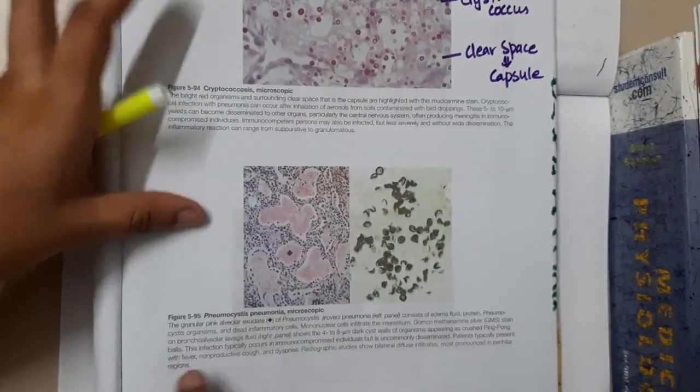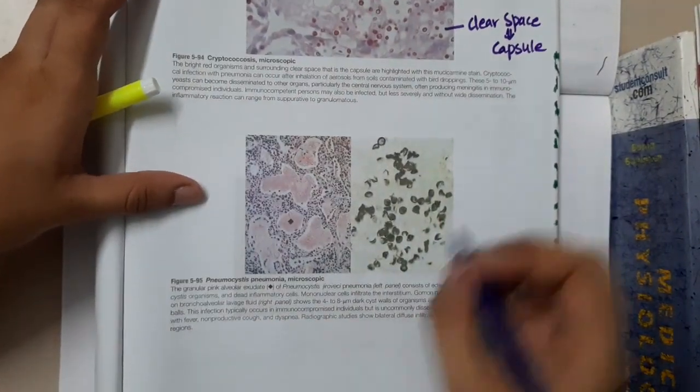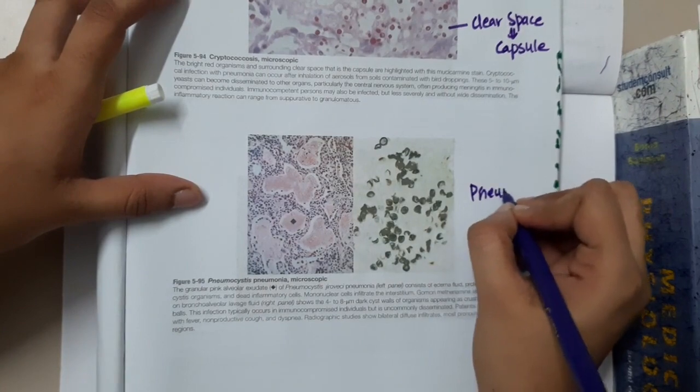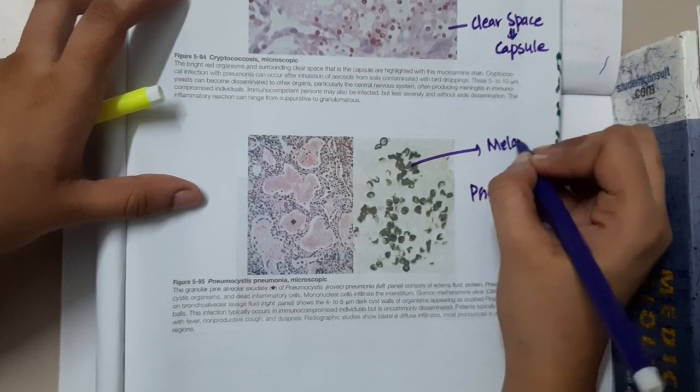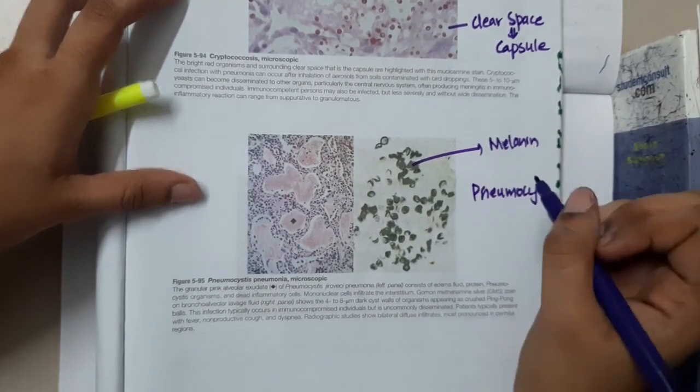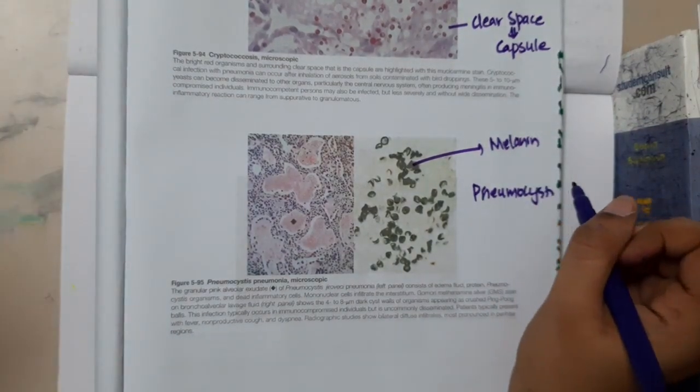This is the picture of Pneumocystis jirovecii. This is Pneumocystis which shows brown color due to the presence of melanin in them. It produces dark colored or brown colored cysts.